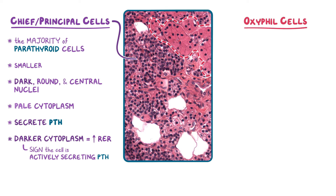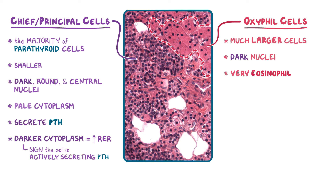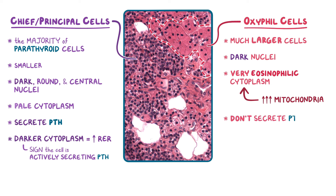The oxyphil cells are the much larger cells that also have dark nuclei, but in addition have a very eosinophilic cytoplasm because of their higher content of mitochondria. These cells don't secrete PTH, and they actually increase in number overall with age. Adipocytes can also be seen within the parathyroid in this image, and they increase in number with age as well.